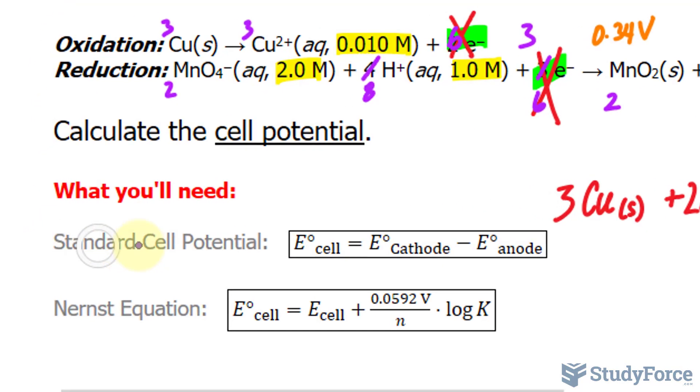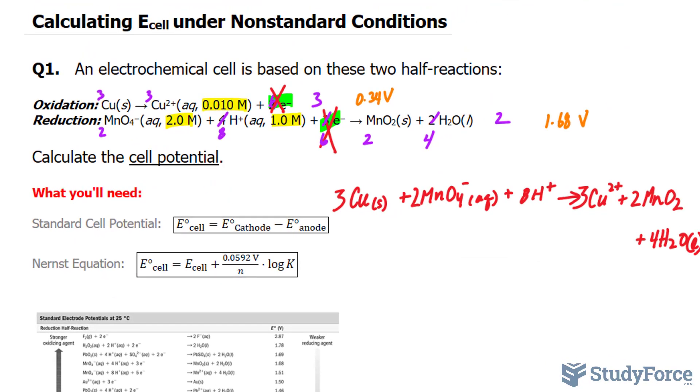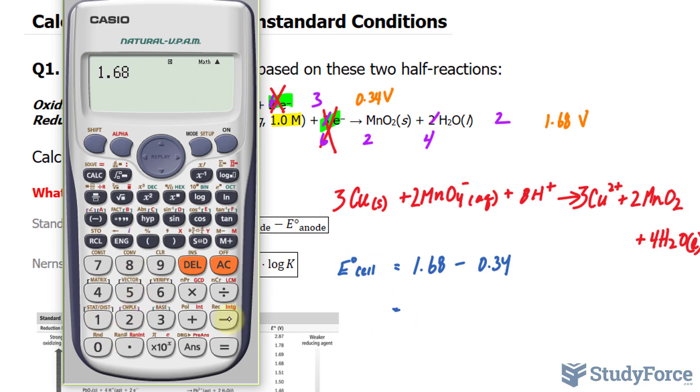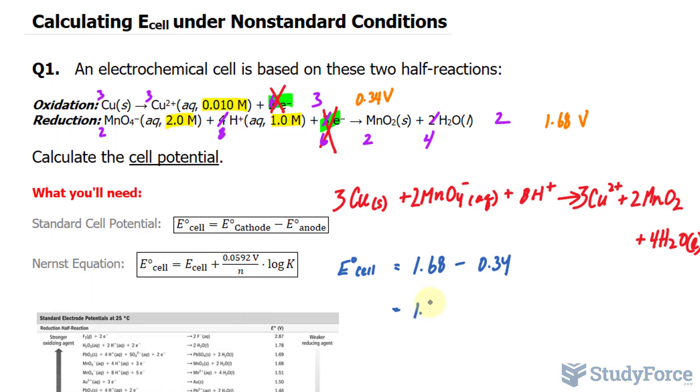Using the formula shown over here, I'm going to calculate the standard cell potential, because we need the standard cell potential for the Nernst equation. We have to take the standard electrode potential of the cathode minus that of the anode. So at the cathode is the reduction reaction. I'll take 1.68 minus 0.34. Now, 1.68 minus 0.34 gives us a standard cell potential of 1.34.